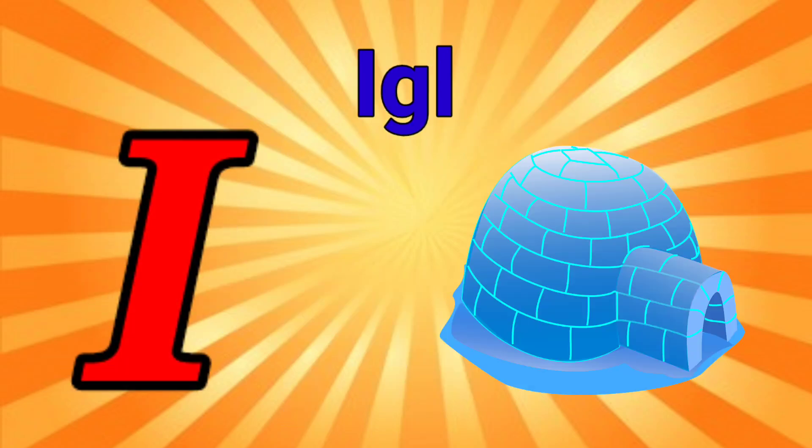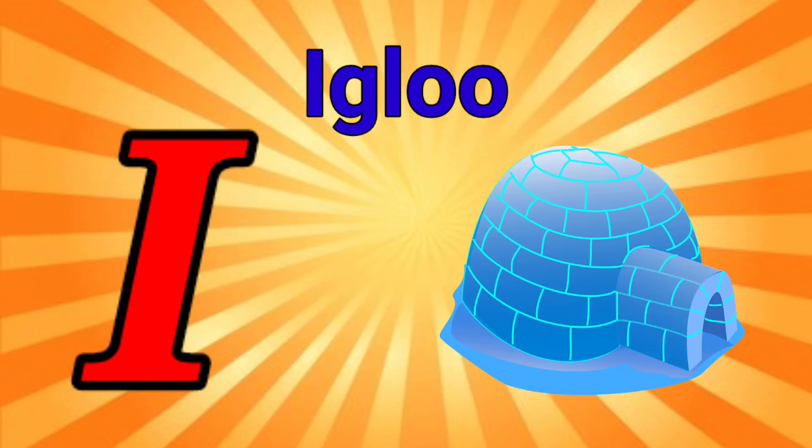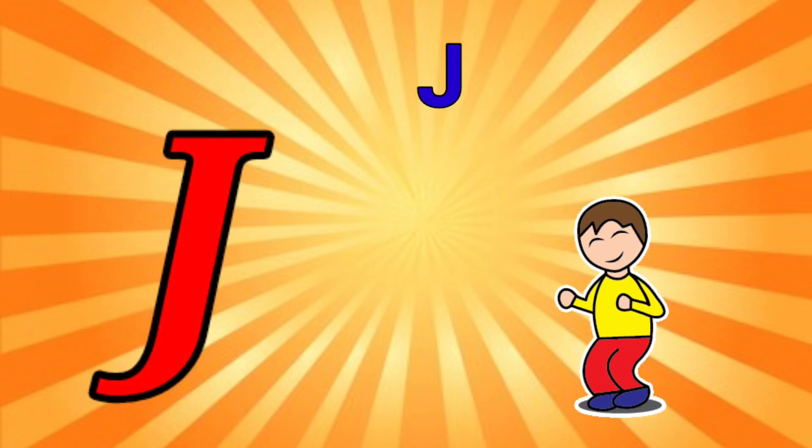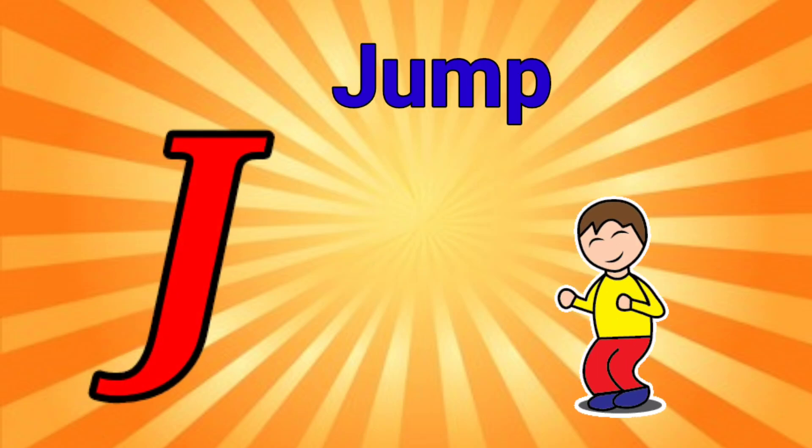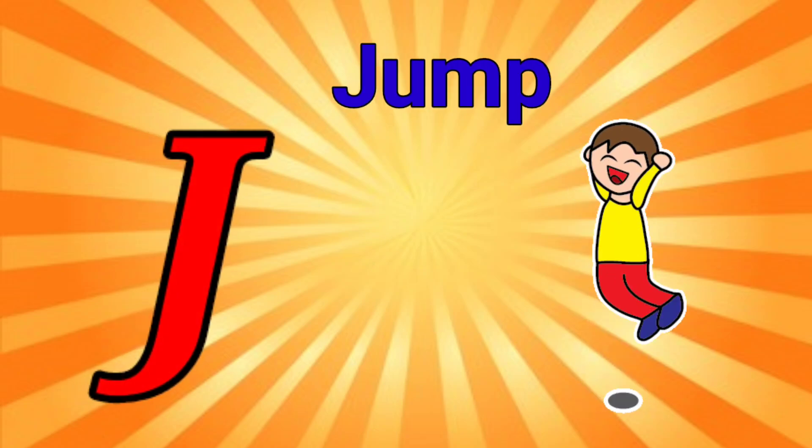I is for igloo, i-i-igloo. J is for jump, j-j-jump.